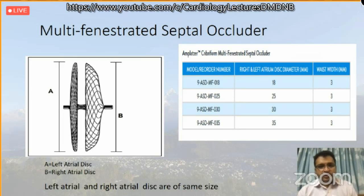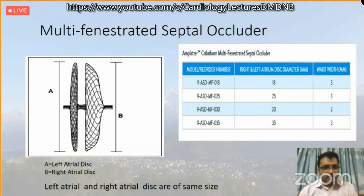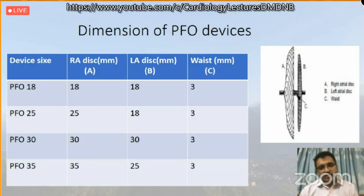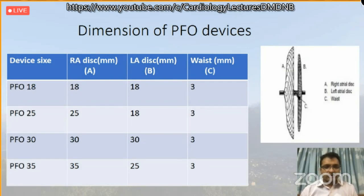Multi-fenestrate septal occluders are used to close multi-fenestrate ASDs. They have a small waist of 3 mm and the device size equals the left atrial disc size; both the right and left atrial discs are the same size. PFO devices: in 25 mm and 35 mm devices the right disc is bigger than the left atrial disc, whereas in 18 mm and 13 mm PFO devices the right and left discs are equal. The waist size is 3 mm in all four PFO devices.